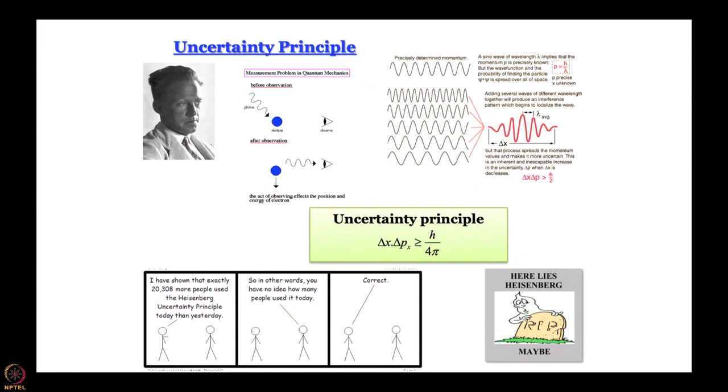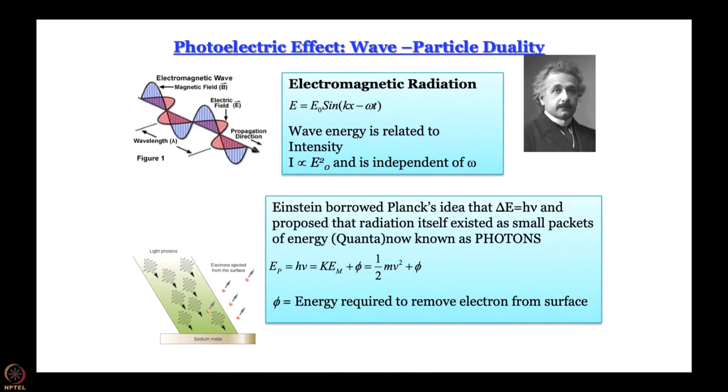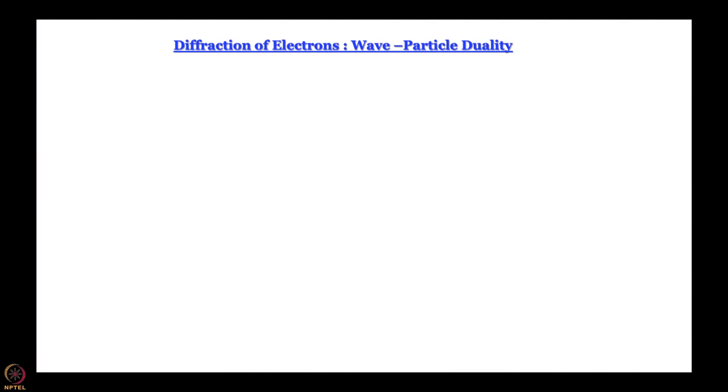In this module, we will try to understand the wave nature of matter, and it sounds quite maddening because it is very difficult to believe that matter can have wave nature. But as you have seen, the uncertainty principle is sort of the last nail in the coffin of Bohr theory, so such a deterministic approach of describing atomic structure is clearly not going to work. In the photoelectric effect, the wave-particle duality of light was already established, so the question was: does such a duality exist for matter as well? Let us talk about the experiments that led to the realization that indeed matter can have wave-like nature.